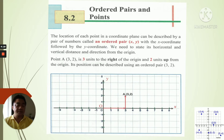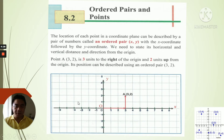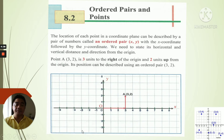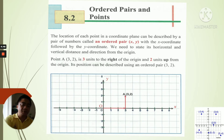To summarize the quadrant signs: Quadrant 1 is both positive; Quadrant 2 is negative x and positive y (upper left); Quadrant 3 is both negative (lower left); and Quadrant 4 is positive x and negative y (lower right).